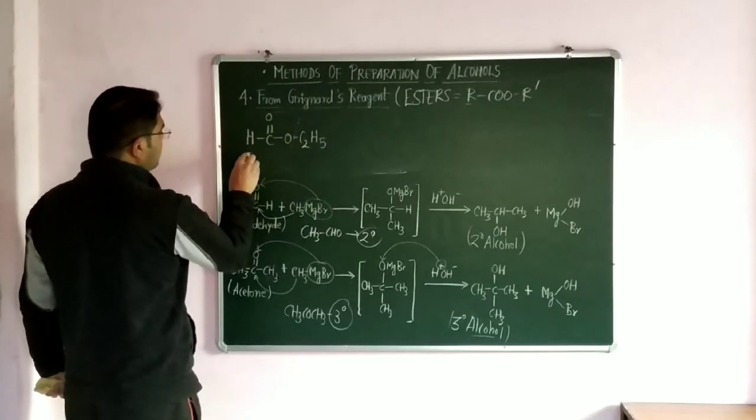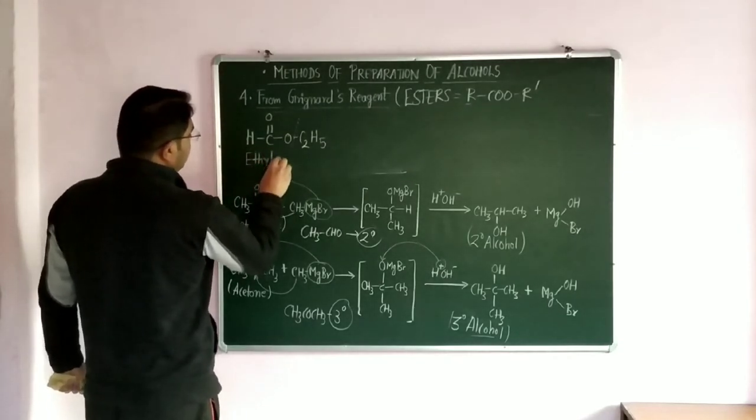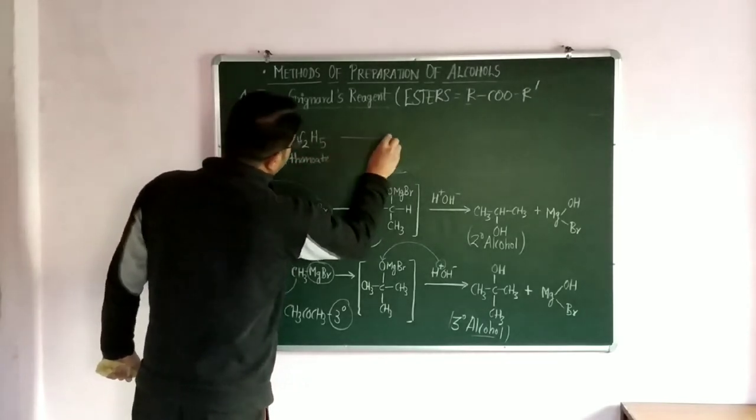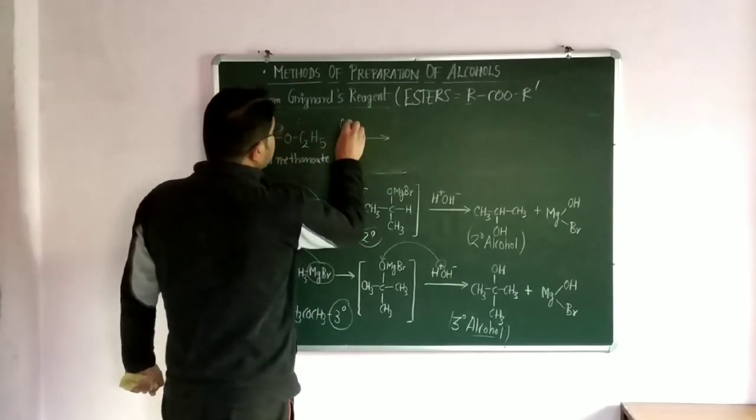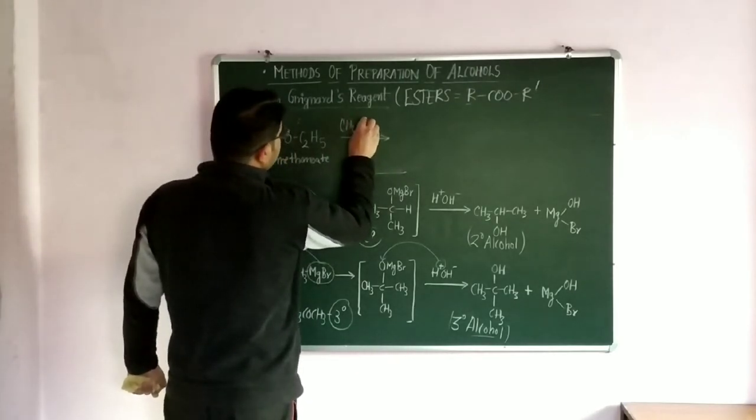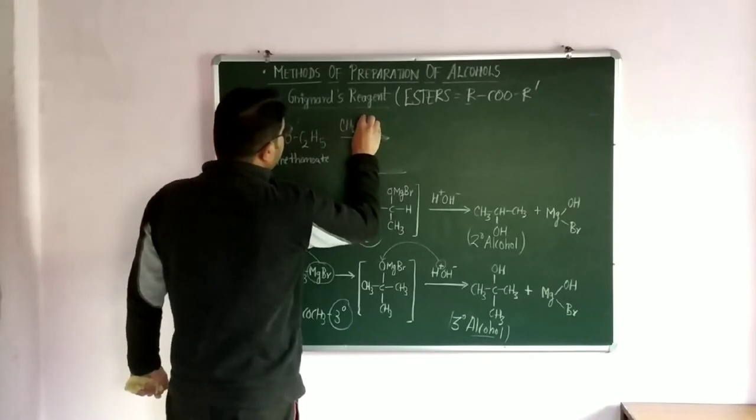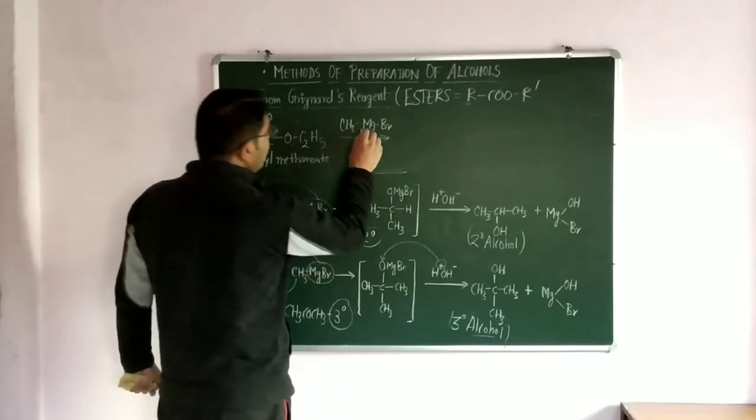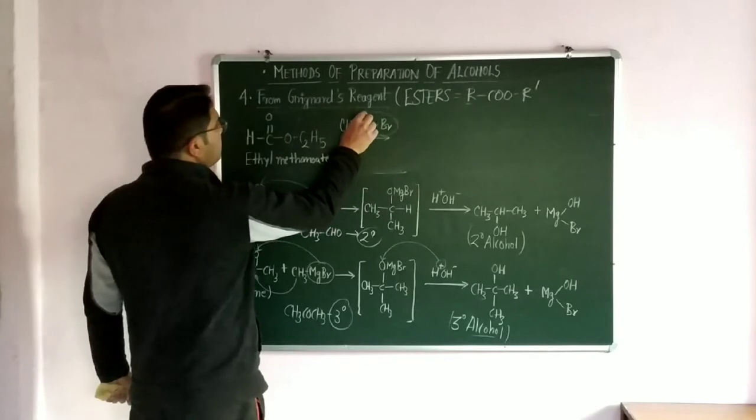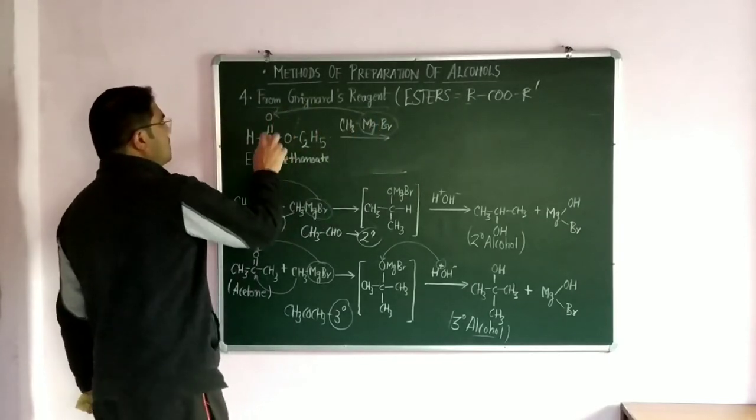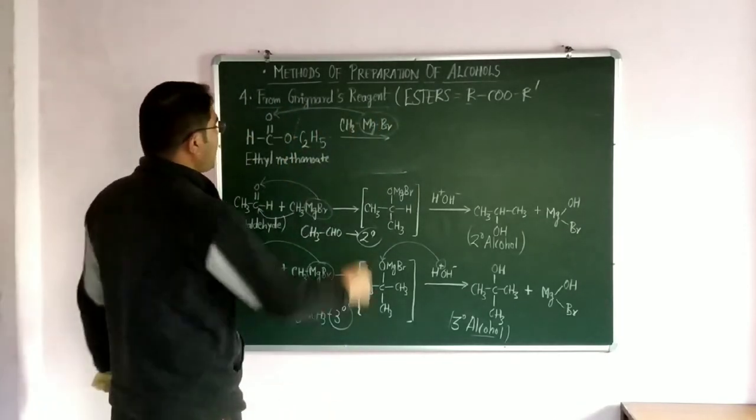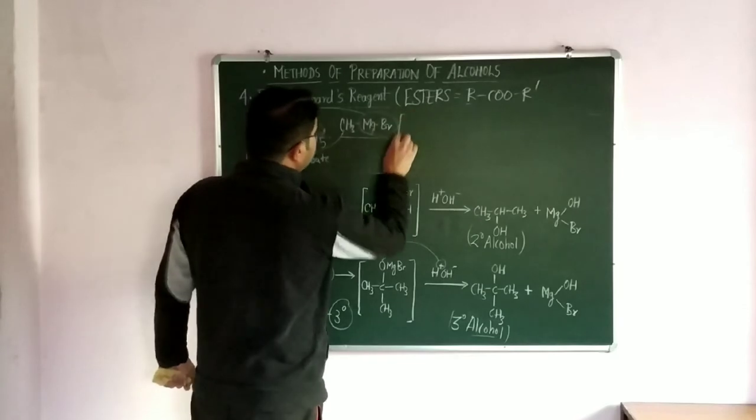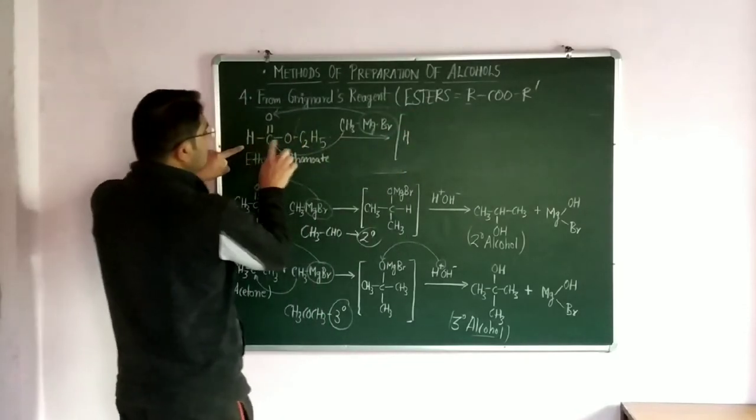When this ethyl methanoate is treated with Grignard reagent CH3MgBr, the reaction is similar. This MgBr part attacks on the carbonyl oxygen and this alkyl part is attached here on the carbon atom. So it forms H attached to carbon, with COOMgBr.